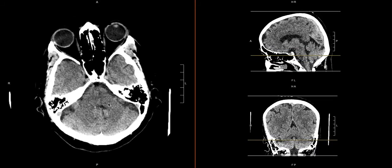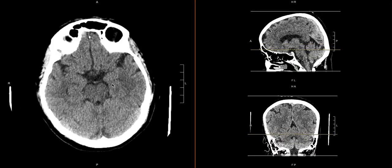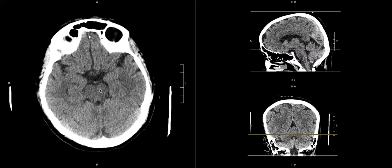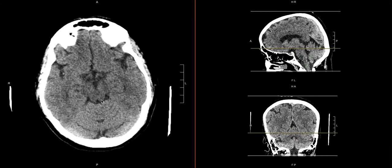Once we've done that, we move up to the midbrain level. There are a lot of cisterns and dependent portions here depending on which level of the midbrain you're at. You're going to look at all of these perimesencephalic cisterns and suprasellar cisterns — looking for blood and effacement of these cisterns to assess for mass effect. At this level we see the crural cisterns, ambient cisterns back here, and the quadrigeminal cistern as we go up and down.